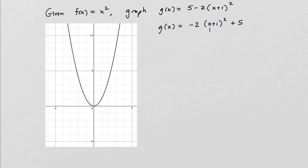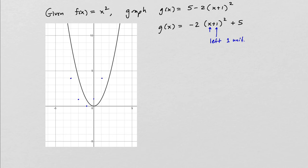You always start with the variable x. The first thing that happens to it is you add 1 to that x, and that is going to shift the graph left 1 unit. So I'm going to shift the graph to the left 1 unit, and when we do that we get this graph.